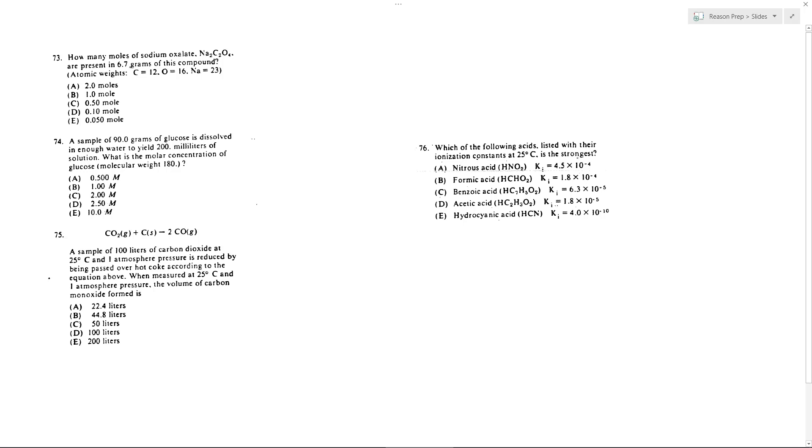In 73, we essentially want to convert 6.7 grams of this compound into moles. So first we need to find its molar mass, and they helpfully give us the atomic weights here. We could always get those from the periodic table if we needed them. So let's first find the molar mass.